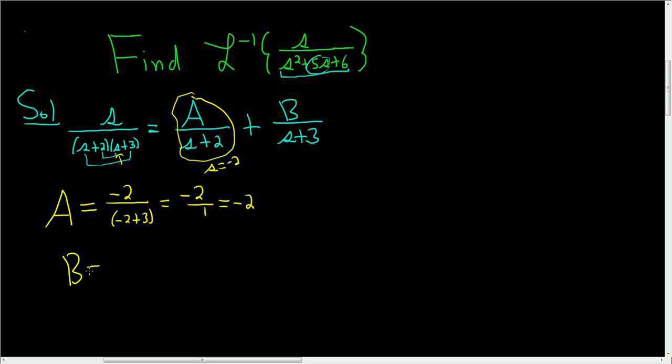Alright, let's do b. Again, we look at b, and we look at what's under b, and we ask, what makes s plus 3 equal 0? Well, s equals negative 3. That's what makes s plus 3 equal 0, so negative 3.